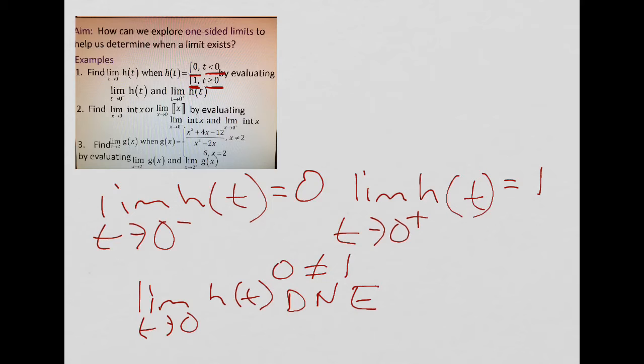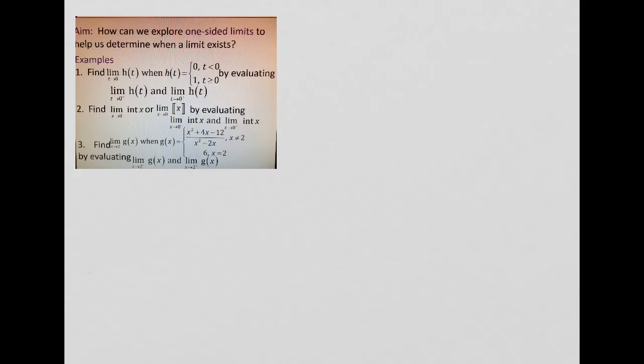Number 2. Get a chance to copy it down. If you didn't copy it down, just pause the video and do so. To find the limit of int of x, it's actually your greatest integer function. And that's why I also wrote it a little bit differently. There's two ways to write your greatest integer function as x approaches 0. And we're going to do so by evaluating the limit of our greatest integer function of x as x approaches 0 from the left, limit of our greatest integer function of x as x approaches 0 from the right.